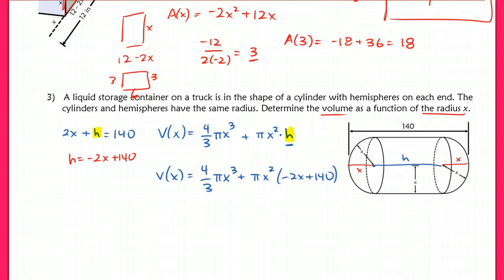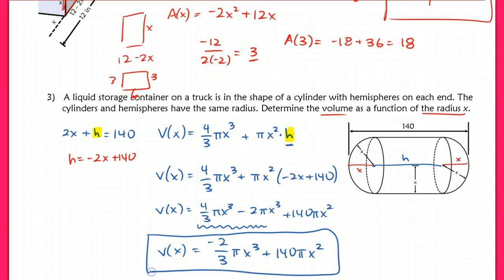Now I want to work on actually simplifying this function and making it a little bit cleaner of an answer. When I notice that I have x³ here, and then if I distribute here, I would get another x³, I want to make sure that I'm rewriting this in terms of simplifying my like terms. So I can simplify πx³, so I'm going to do that. So I have 4/3πx³ - 2πx³ + 140πx². And now I can simplify here. So 4/3π - 2π is going to be -2/3πx³, and that plus 140πx² cannot be combined. And this would be my final function written nice and clean.